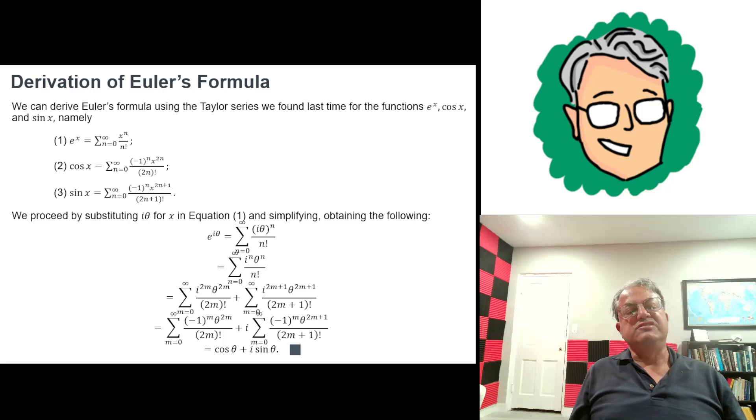Our second sum: we can write i to the 2m plus 1 as i times i to the 2m. We already showed that i to the 2m was minus 1 to the m. So we have i times minus 1 to the m. We can pull the i out of the sum. So we have i times the sum as m goes from 0 to infinity of minus 1 to the m times θ to the 2m plus 1 over 2m plus 1 factorial. If you look at the Taylor series for cosine x and sine x, you see that this first sum is the Taylor series for cosine θ, and the second is the Taylor series for sine θ. The result is just cosine θ plus i sine θ.